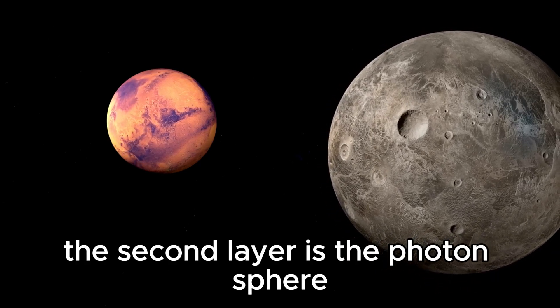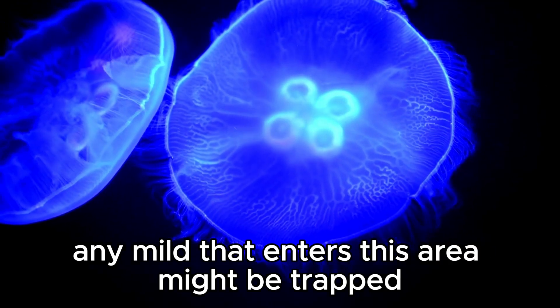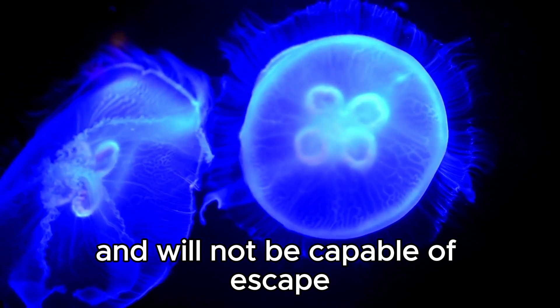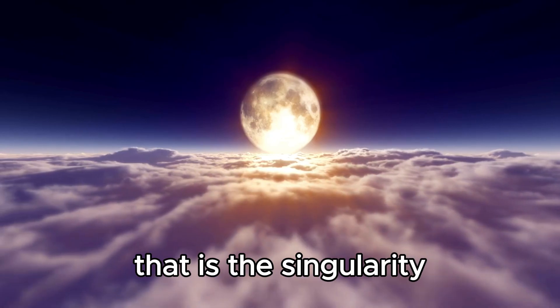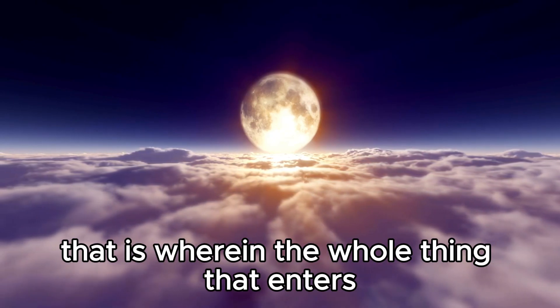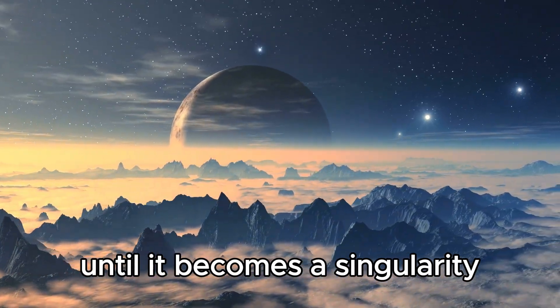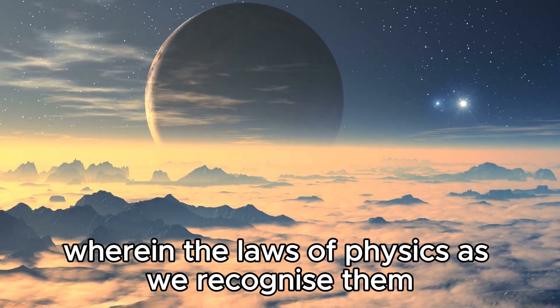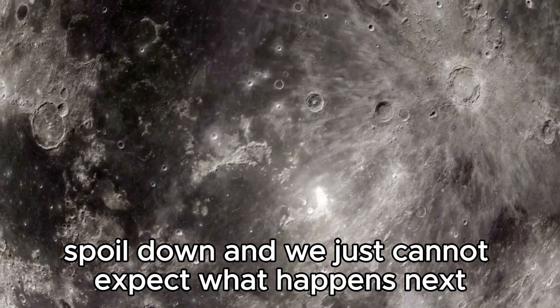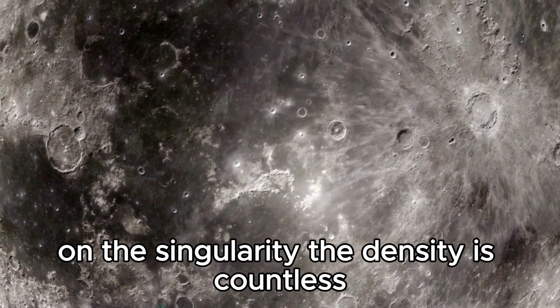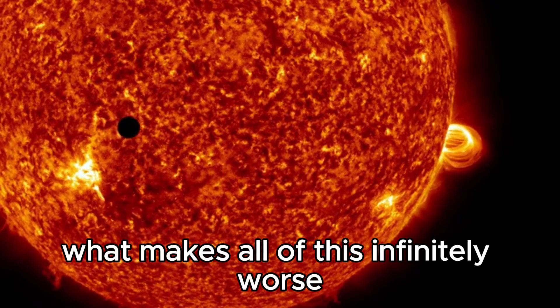The second layer is the photon sphere, which is the region where light orbits the black hole. Any light that enters this area will be trapped and will not be capable of escaping the black hole's gravitational pull. Finally, we come to the third layer, which is the singularity. This is where everything that enters the black hole gets compressed down astronomically until it becomes a singularity. The singularity is a point in spacetime where the laws of physics as we recognize them break down, and we just cannot predict what happens next. At the singularity, the density is infinite, and the laws of physics as we recognize them cease to exist.